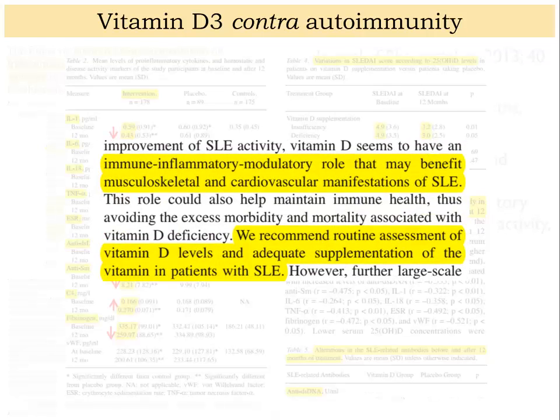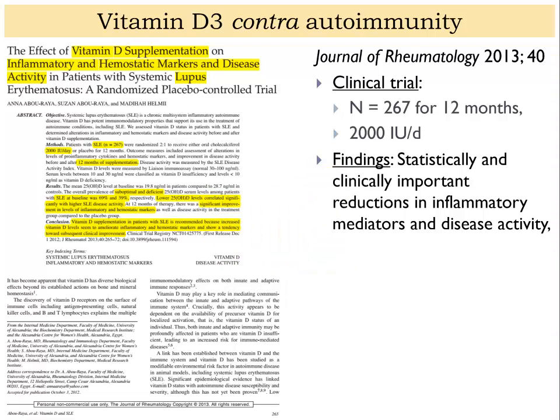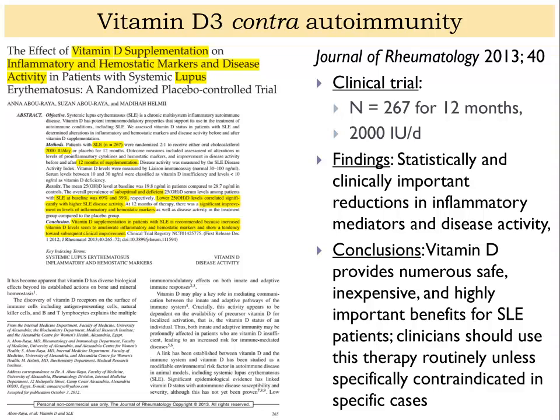The authors concluded that vitamin D seems to have important immune-inflammatory modulatory roles that may benefit musculoskeletal and cardiovascular manifestations of SLE, and they recommend routine assessment of vitamin D levels and adequate supplementation in patients with lupus. Based on my work, I would suggest 4,000 to 10,000 international units per day as physiologically appropriate — their use of 2,000 units was a little low, but they still got excellent results. Vitamin D was proven to provide safe, inexpensive, and highly important benefits for these SLE patients, and clinicians should use this therapy routinely unless specifically contraindicated.